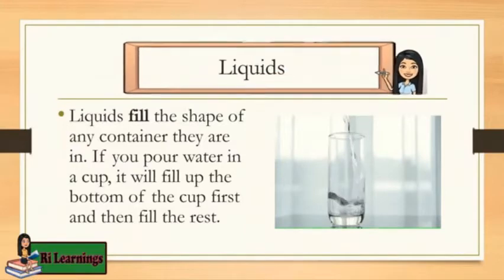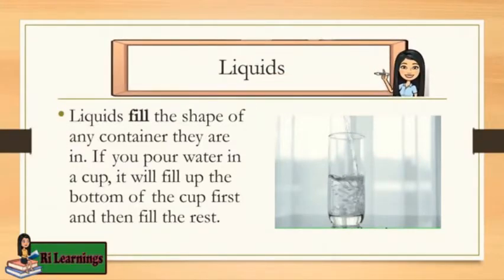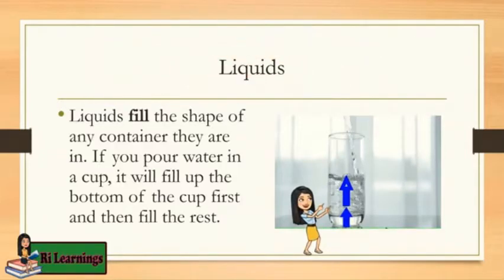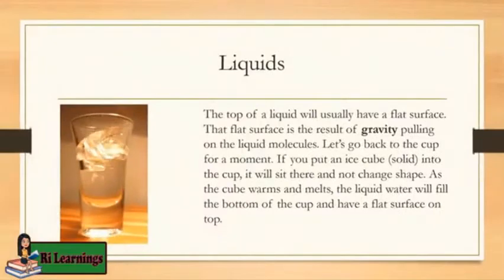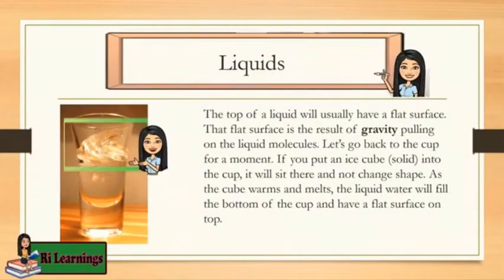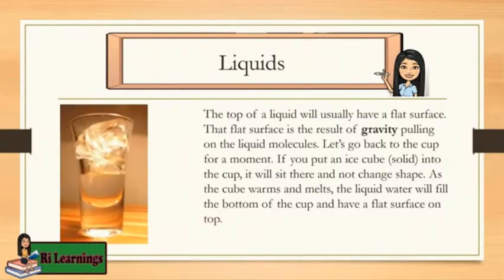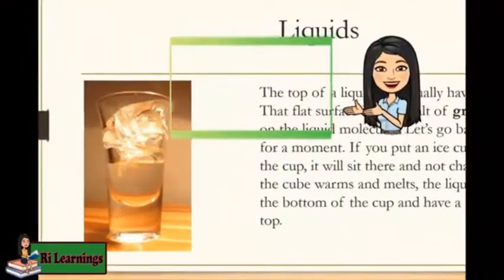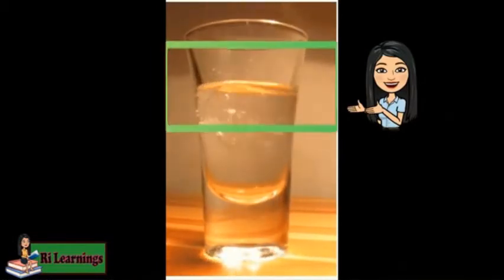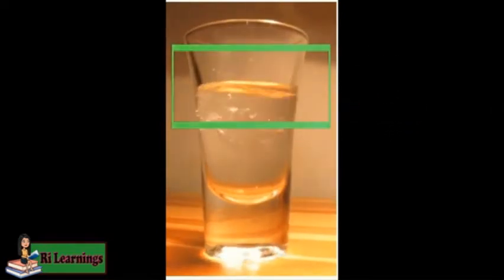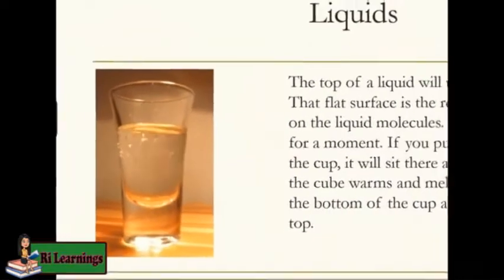Liquids fill the shape of any container they are in. If you pour water in a cup, it will fill up the bottom of the cup first, and then fill the rest. The top of a liquid will usually have a flat surface. That flat surface is the result of gravity pulling on the liquid molecules. If you put an ice cube, which is a solid, into the cup, it will sit there and not change shape. As the cube warms and melts, the liquid water will fill the bottom of the cup and have a flat surface on top.